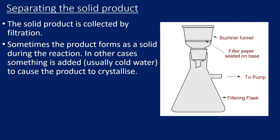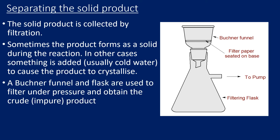If the reaction forms a solid product, we can just filter it straight away. In other cases, we might need to add cold water in order for our product to crystallize. We don't use gravity filtration — we use reduced pressure filtration, using a Buckner funnel and Buckner flask attached to a vacuum pump. This speeds up the rate of filtration, and our crude product is collected on the filter paper in the Buckner funnel.